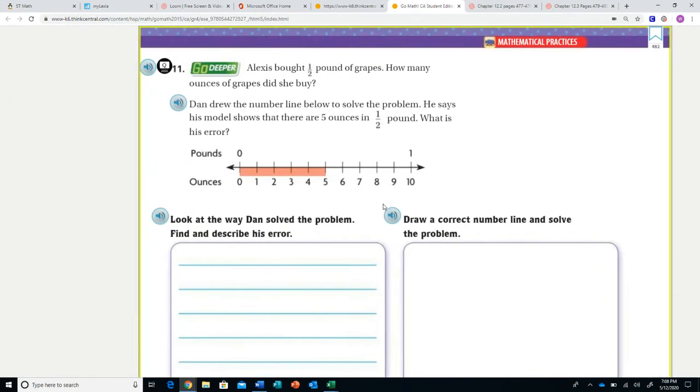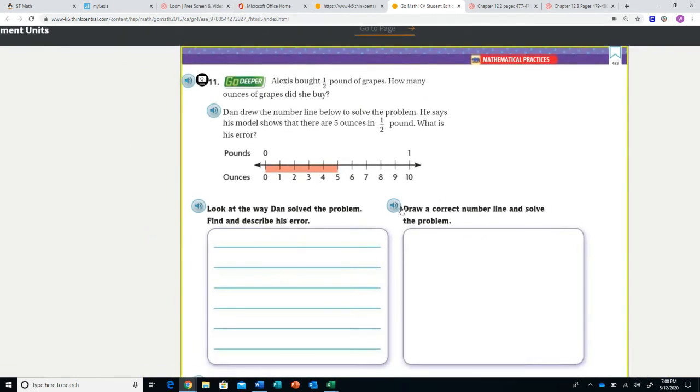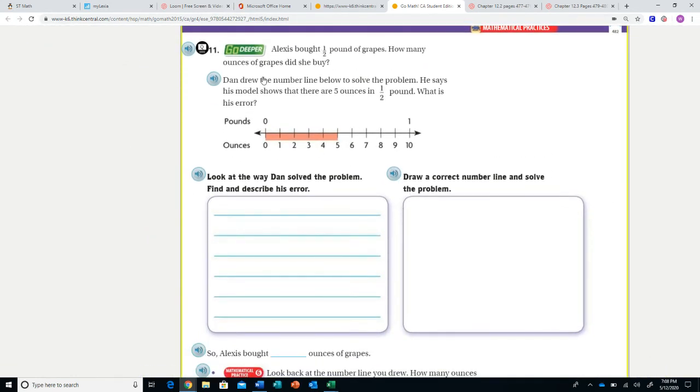Question 11 - now these kind of questions, they tend to take a little bit longer. Alexis bought a half pound of grapes. How many ounces of grapes did she buy? Dan drew the number line below to solve the problem. He says his model shows that there are five ounces in half a pound. What is his error?